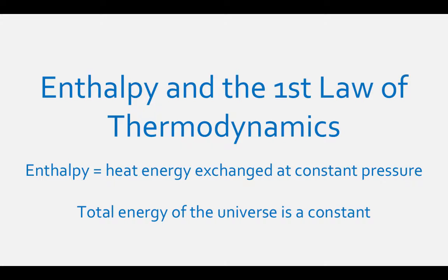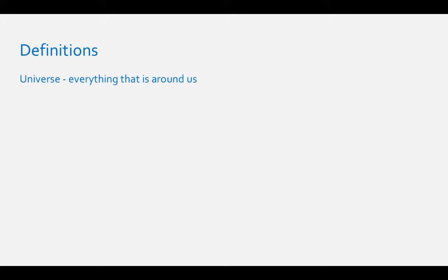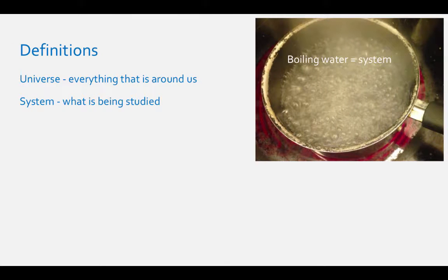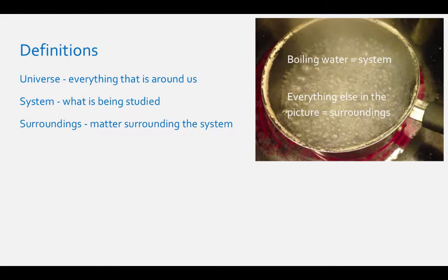Let's define some terms we introduced already. What is the universe? It is everything we see around us, and that which we cannot see, but only imagine. For the sake of this chemistry class, there are two parts to every universe. The system is what is being studied. If you are boiling water, the system is the water, and the surroundings are everything else around the system — the pot, the oven, and even you. We define the universe as the system plus the surroundings.